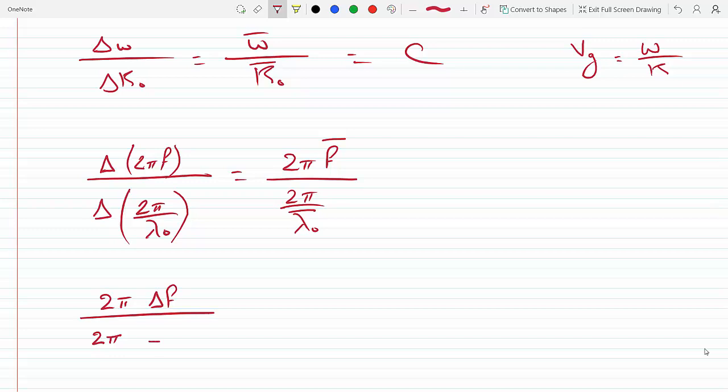This is minus one over λ square times—so this is, you can think of this as the derivative of one over λ zero. That the chain or quotient rule minus one over λ₀ squared times the chain rule which is the change in the wavelength.